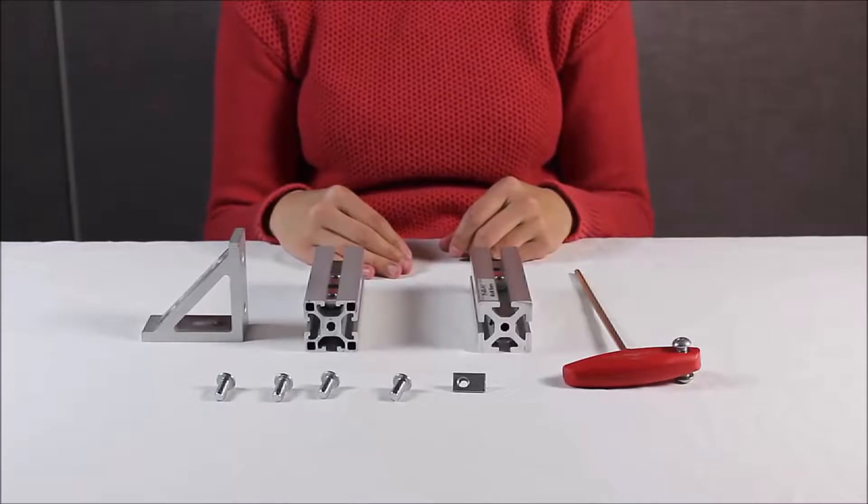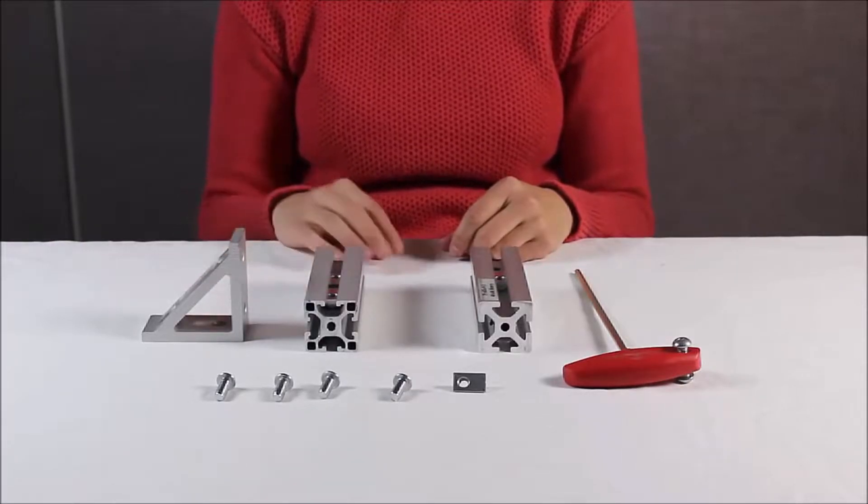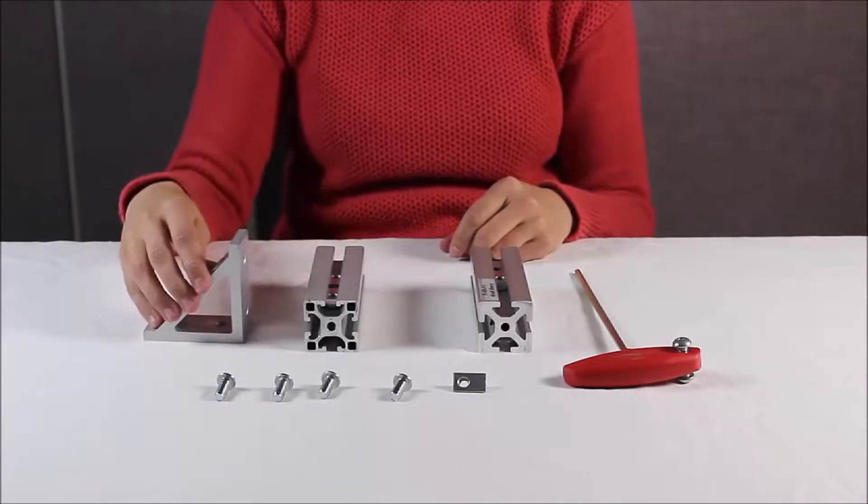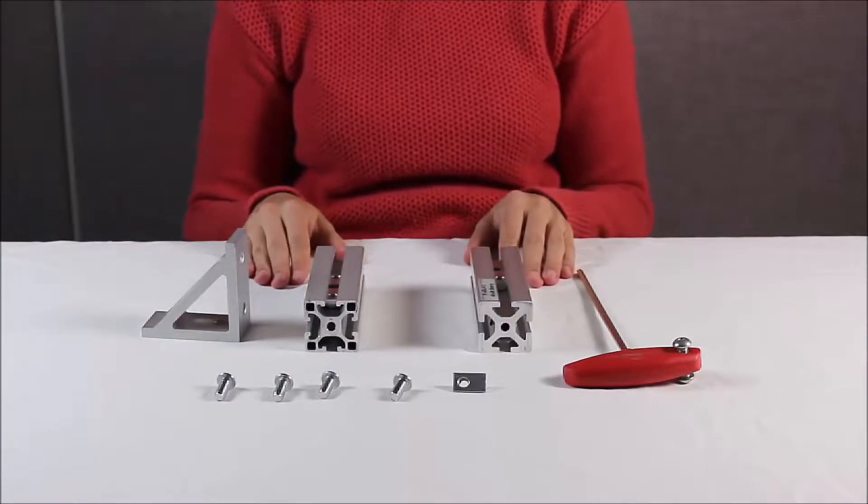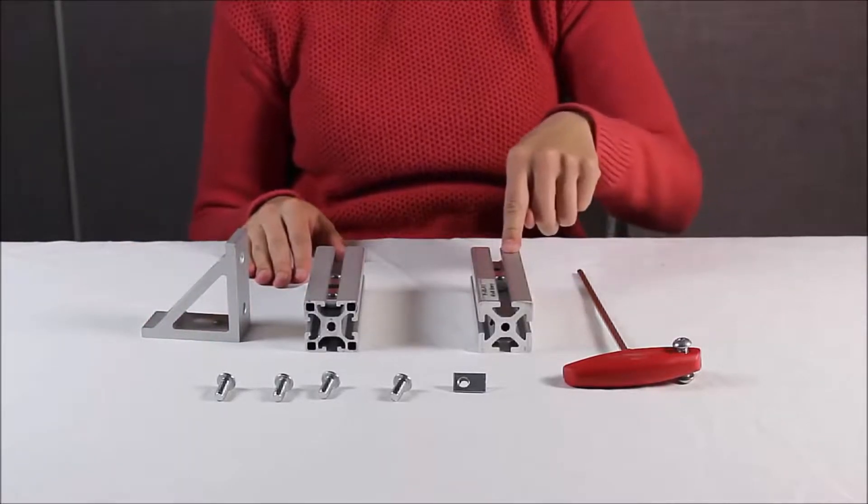I'm going to show you how to make a 90 degree connection using the gusset bracket. Similar to the joining plate, the gusset bracket requires no machining of the profile itself, but it allows you to make a 90 degree connection along the entire length of the profile.